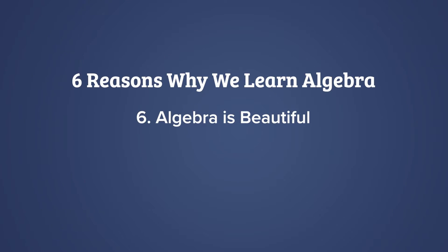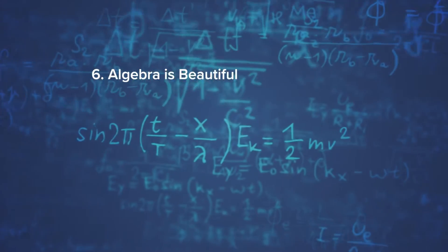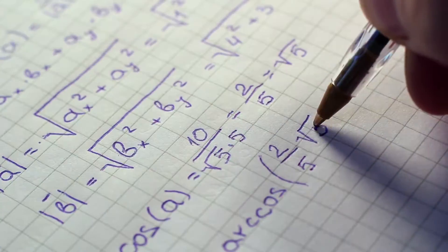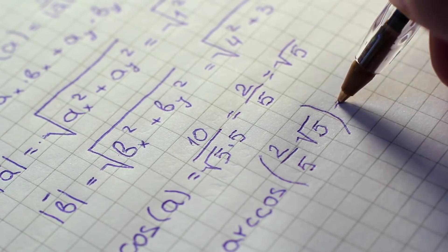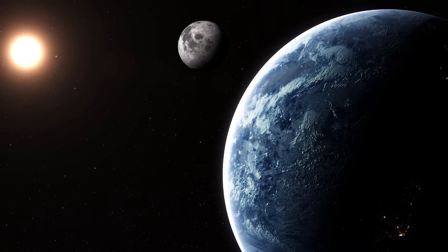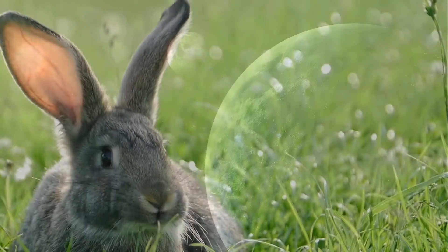Number six: Algebra is beautiful. The beauty of algebra is an optional benefit, because one has to choose to enjoy something. But algebra provides us with a basic language to describe so many types of real-world phenomena, from gravity to the population growth of rabbits.